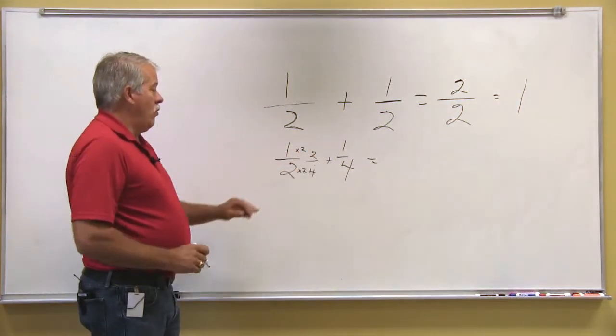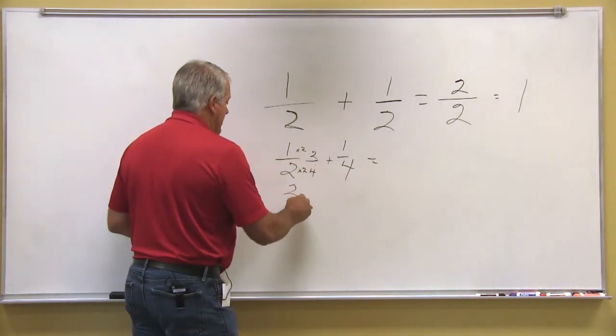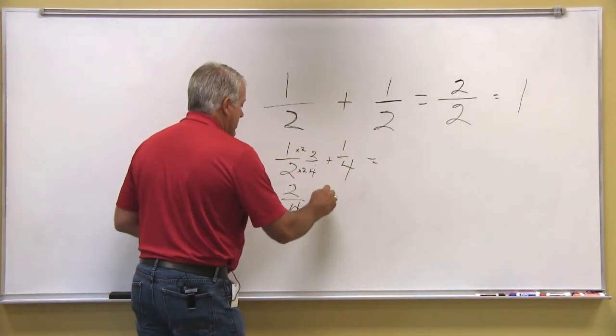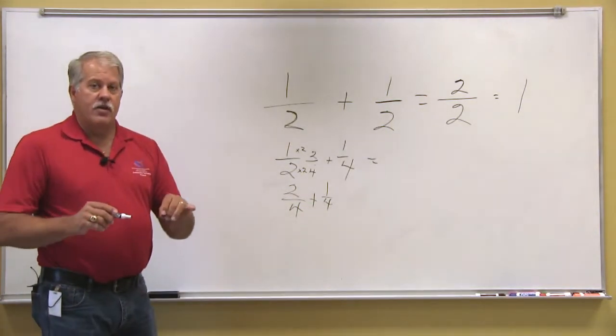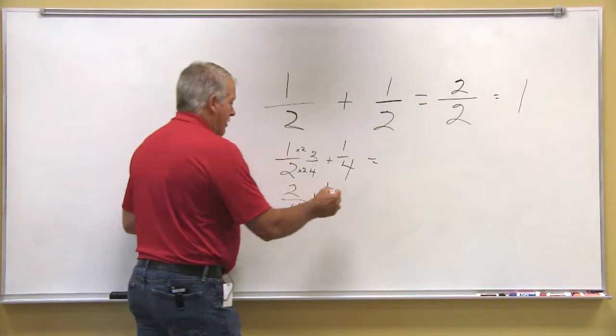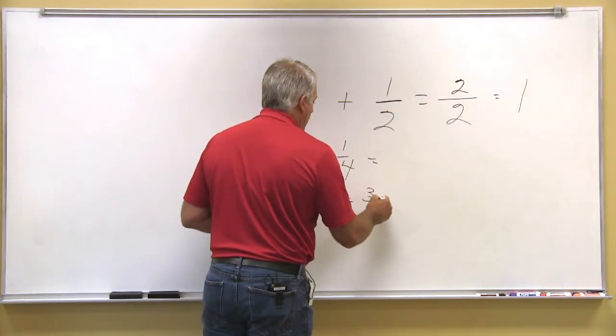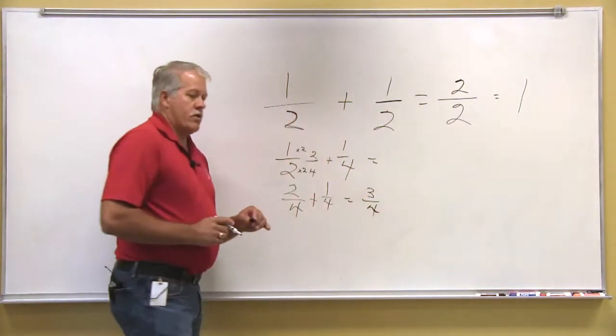So now 1 half is the same as 2 fourths plus 1 fourth. I have common denominators. I'm able to add them together, which is equal to 3 fourths.